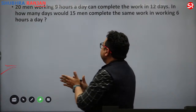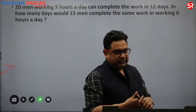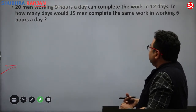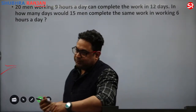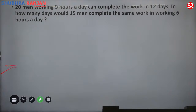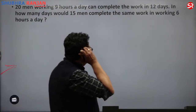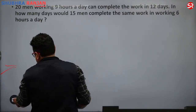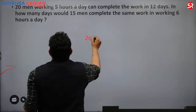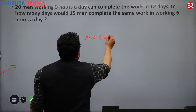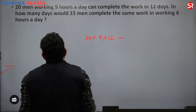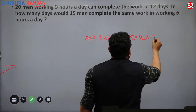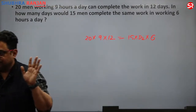Question two: 20 men working 9 hours a day can complete a work in 12 days. In how many days would 15 men complete the same work working 6 hours a day? Using M1 × T1 × D1 equals M2 × T2 × D2: 20 × 9 × 12 equals 15 × 6 × D2, giving D2 equals 24 days.